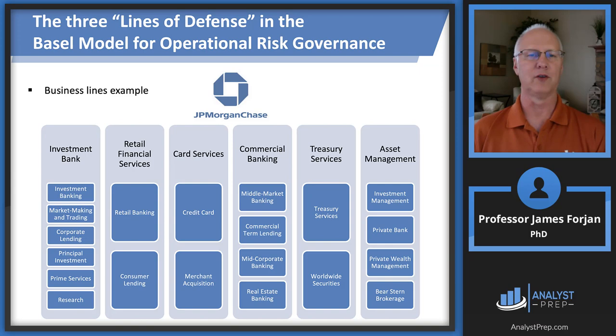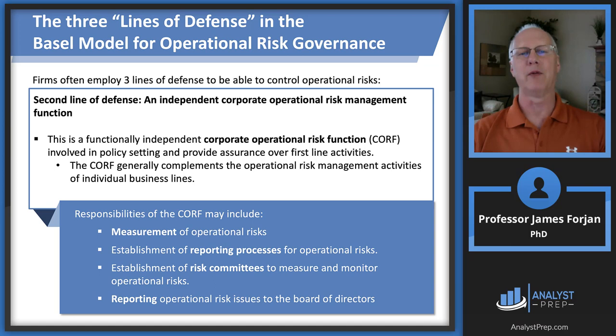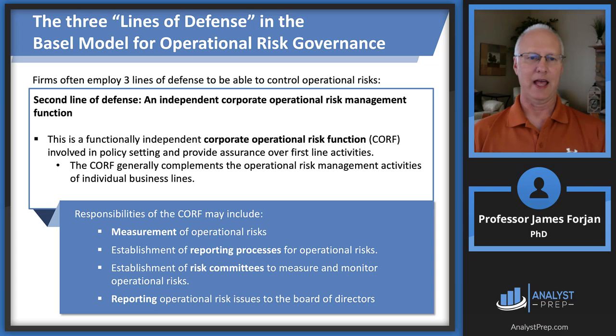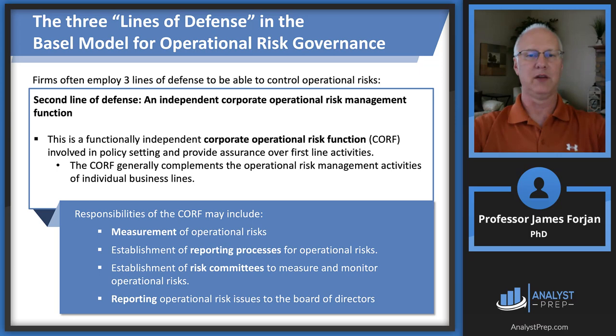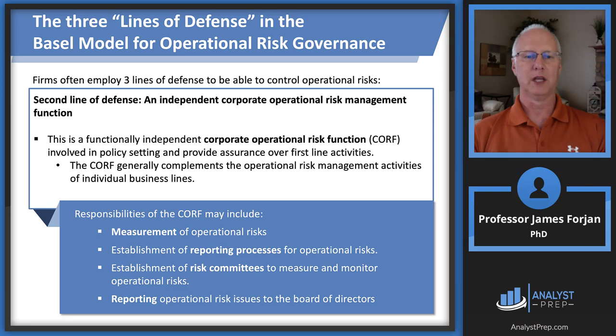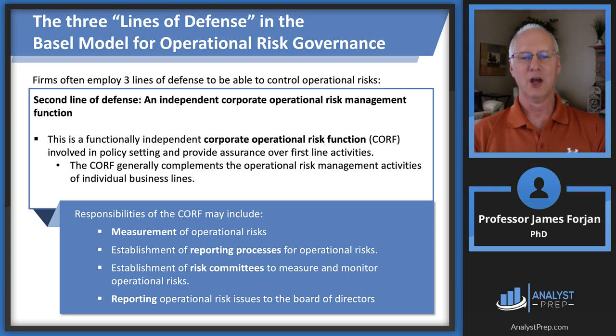The second line of defense is what I was talking about with the umbrella — an independent corporate operational risk management function. This operates at the corporate level and involves policy setting that provides assurance over those first-line activities, so there's somebody acting as the umbrella. Their responsibilities include measuring operating risks, reporting on them, having committees, and of course keeping the board of directors informed. We'll talk a lot about the board of directors inside of this slide deck.